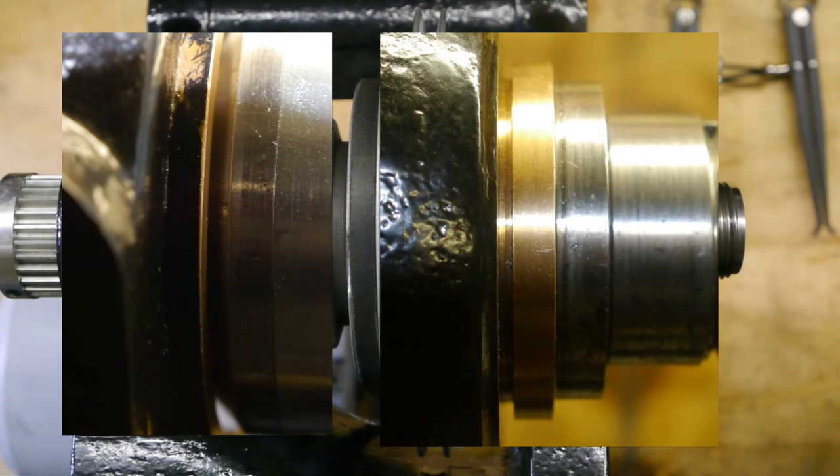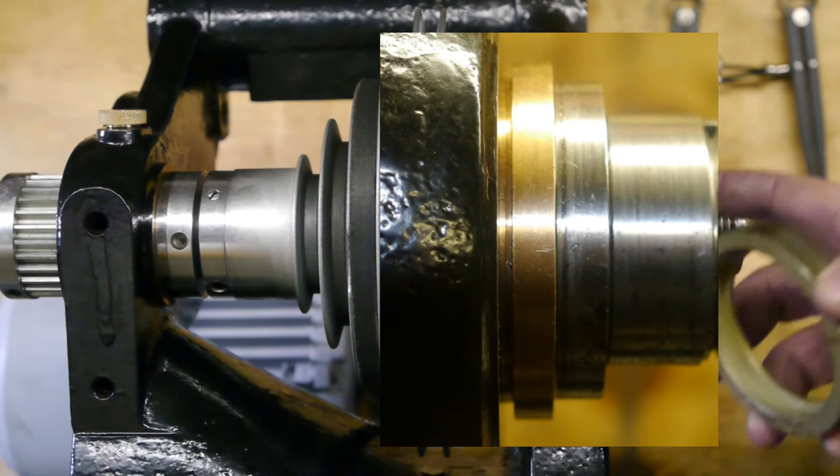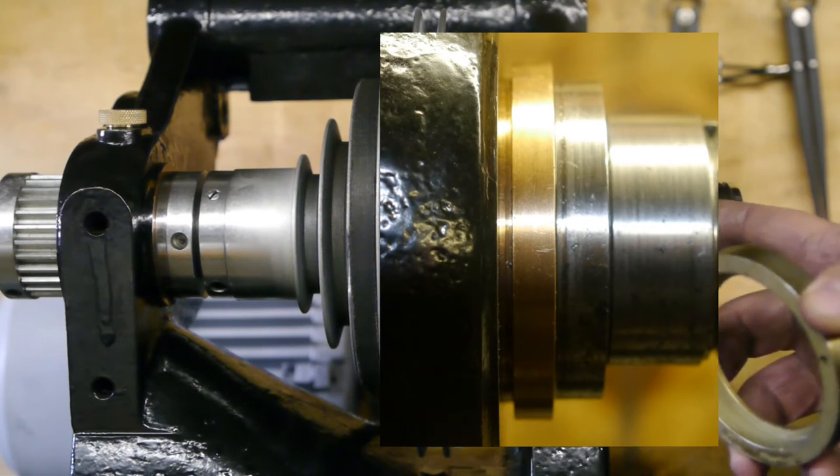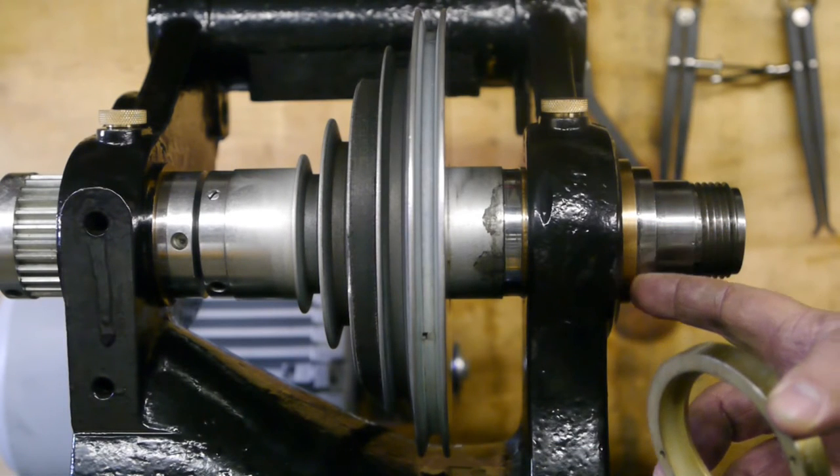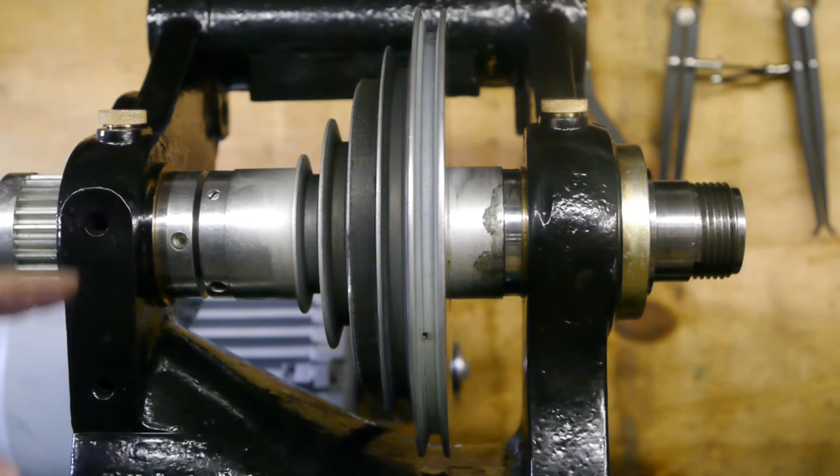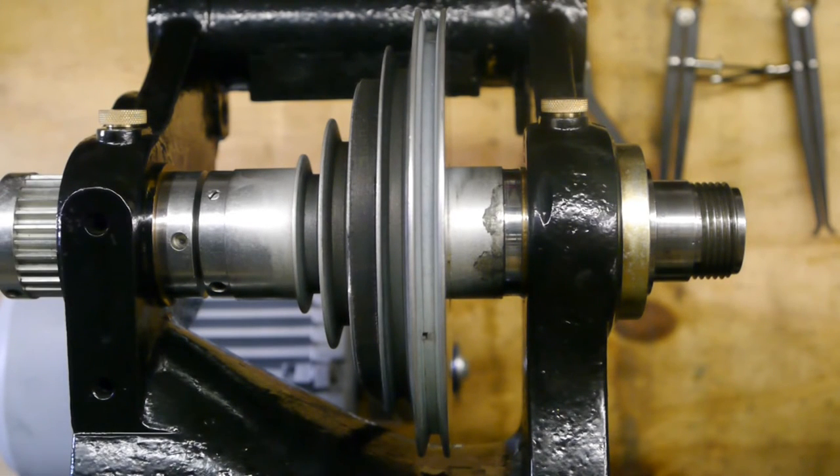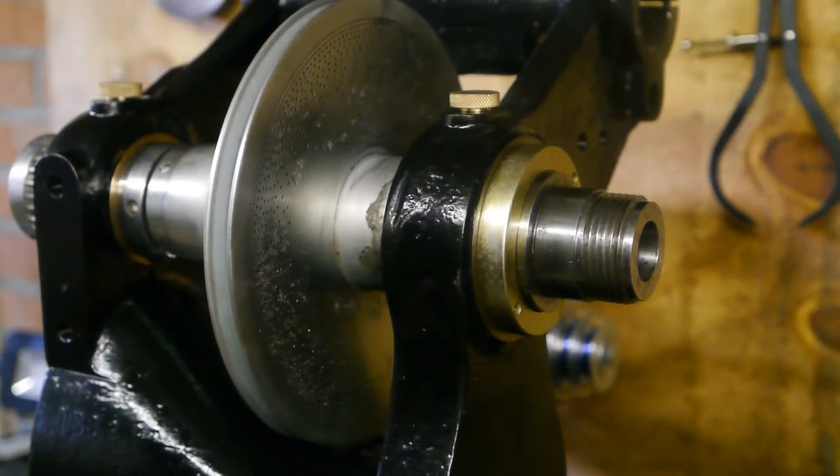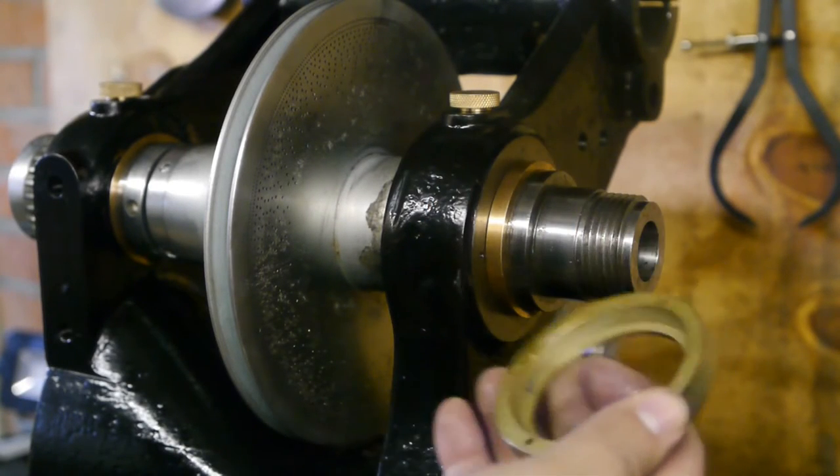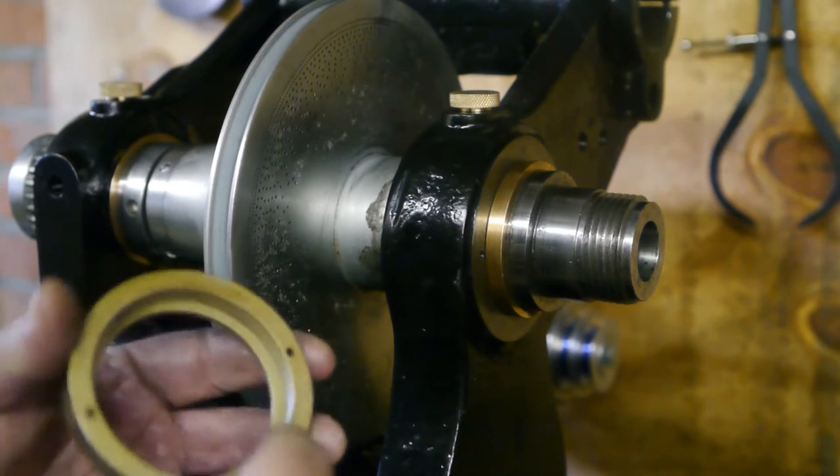Not only does the whole spindle move forward when you tighten this ring too much, it also moves forward when you hit a drawbar to punch out a taper. So every time I hit the drawbar it moves the whole spindle assembly forward. So to fix this problem I'm gonna cut about two millimeters off the back of this ring.